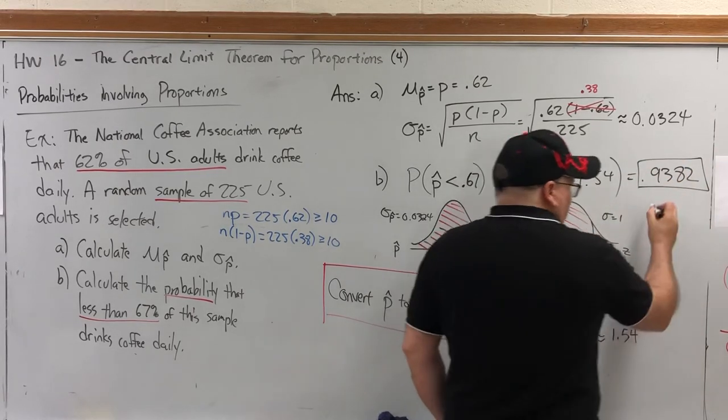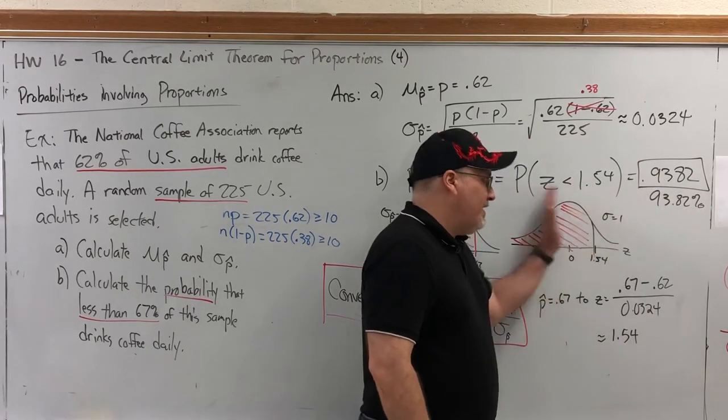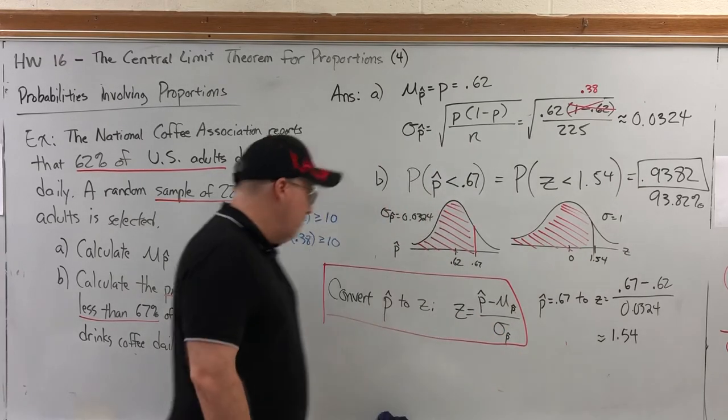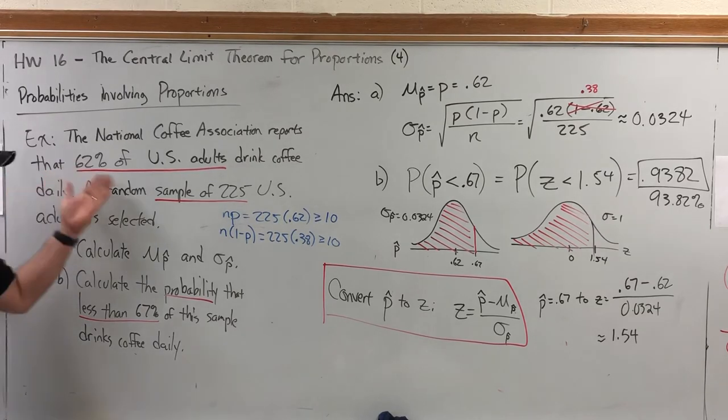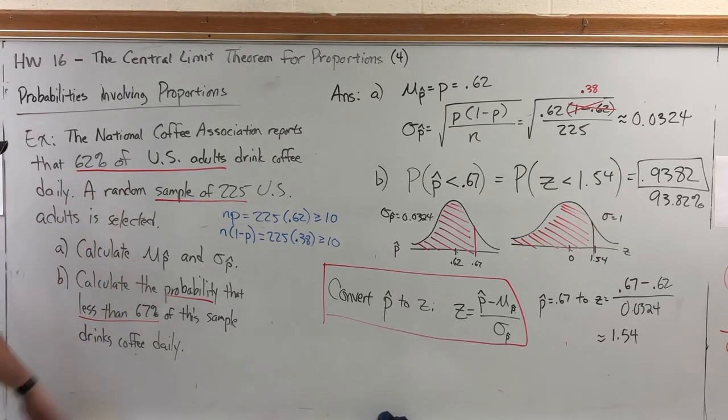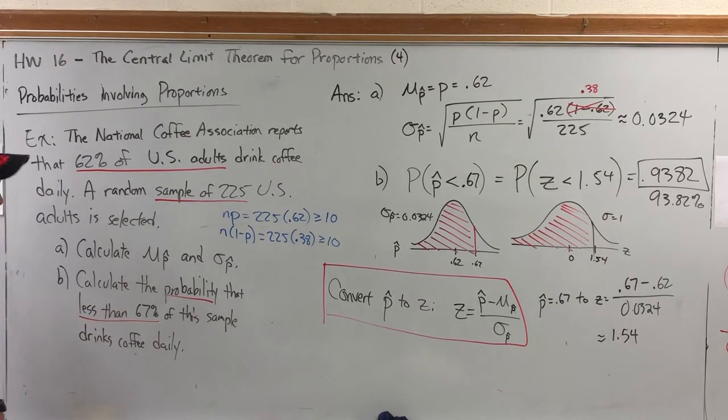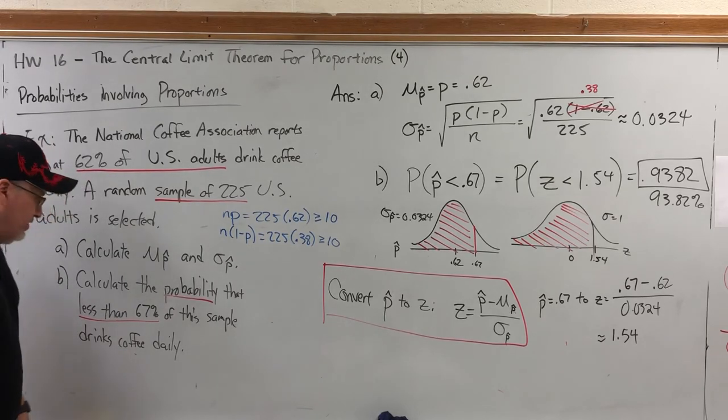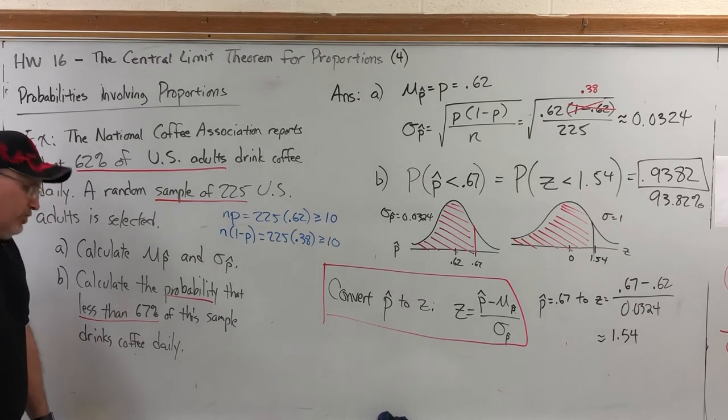The area that we look up is 0.9382, or as a percent 93.82%, which visually means that 93.82% of this bell curve is shaded, but contextually means that if 62% of all Americans drink coffee daily and we pick 225 people at random, there is a 93.82% chance that 67% or less of them drink coffee daily.